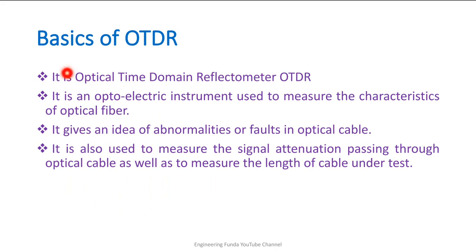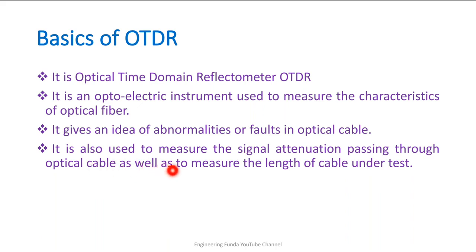OTDR is an optical electronic instrument used to measure characteristics of optical fiber. It gives an idea about abnormalities or faults in optical cable. It is also used to measure signal attenuation passing through optical cable as well as to measure the length of the cable under test. We usually use OTDR to find fault position as well as the length of the cable. The idea behind OTDR is to have a measurement based on reflected signal.